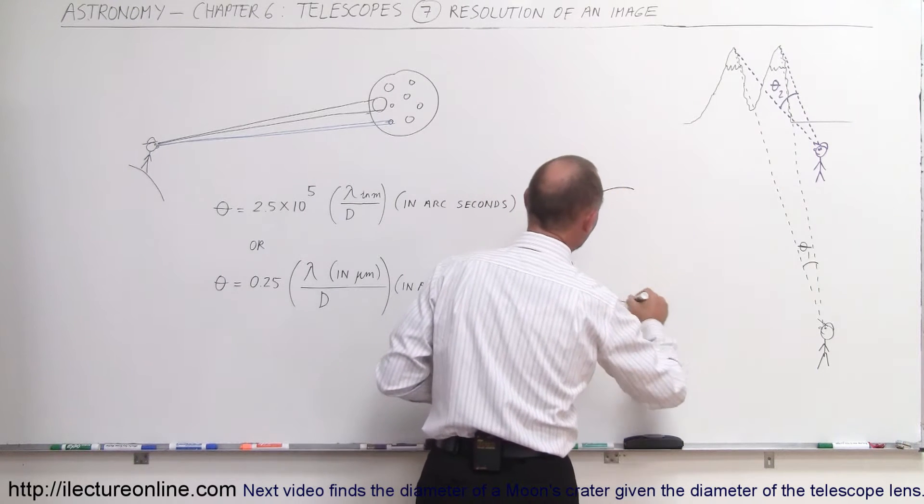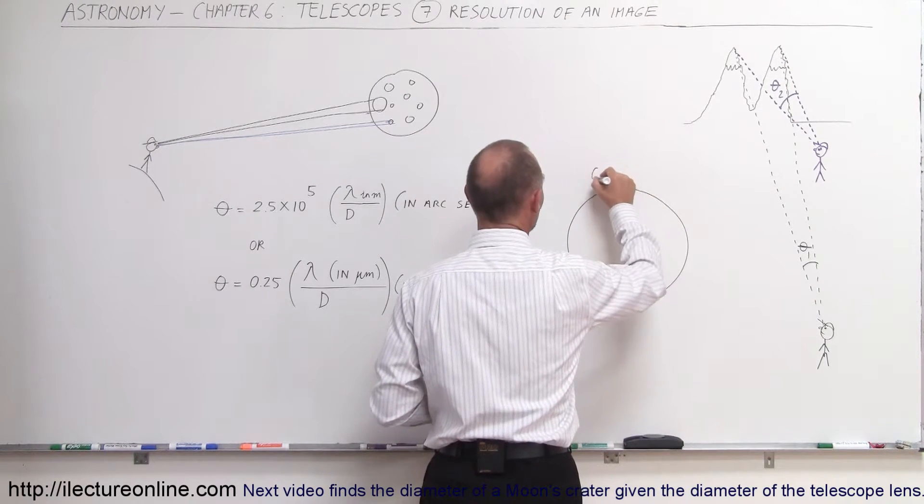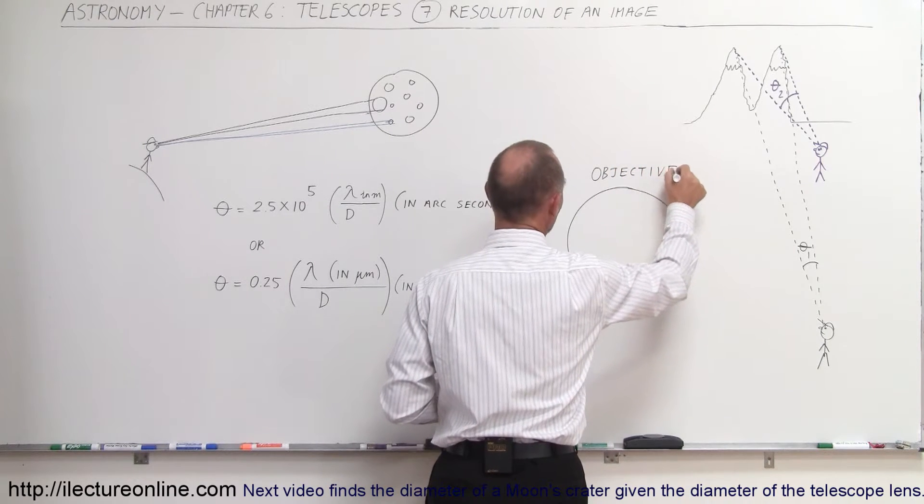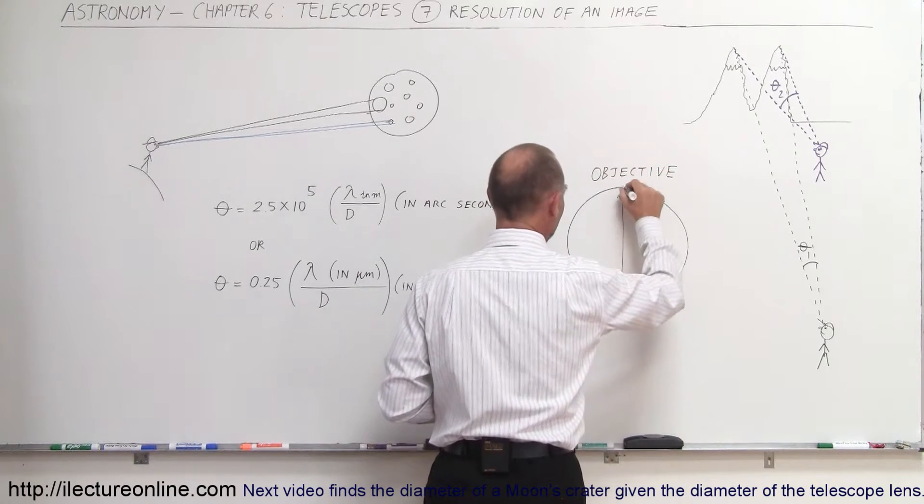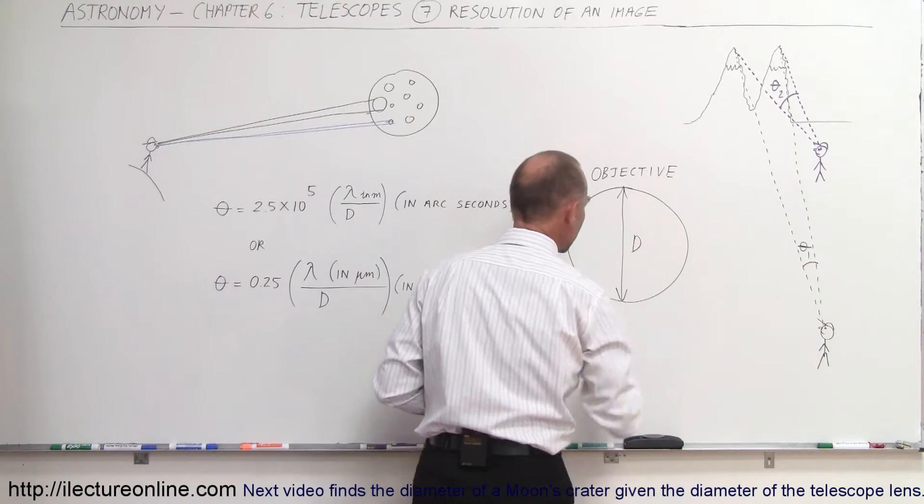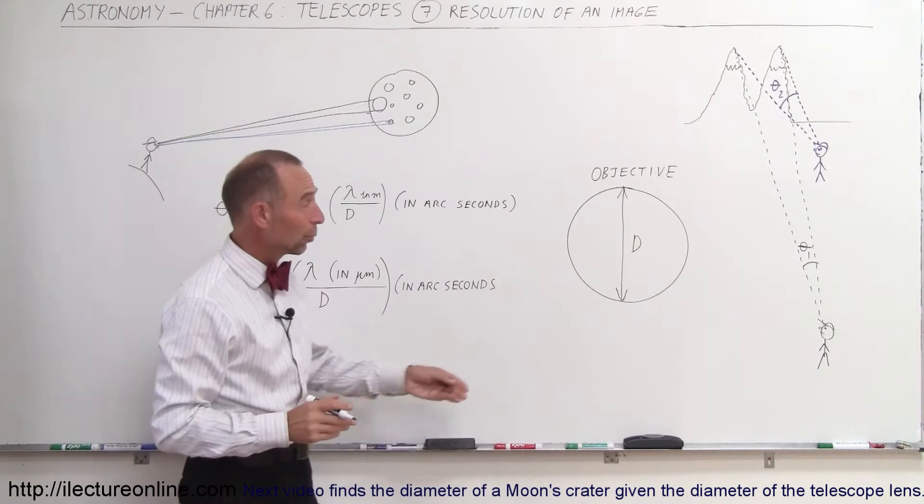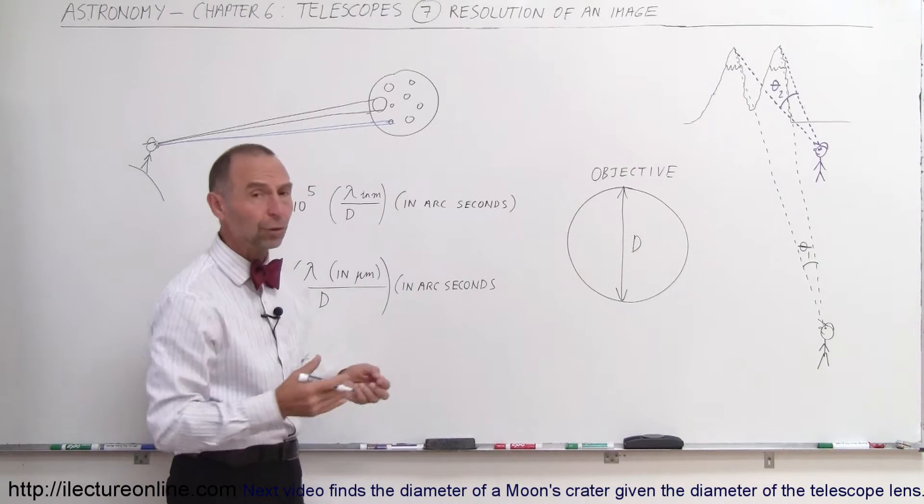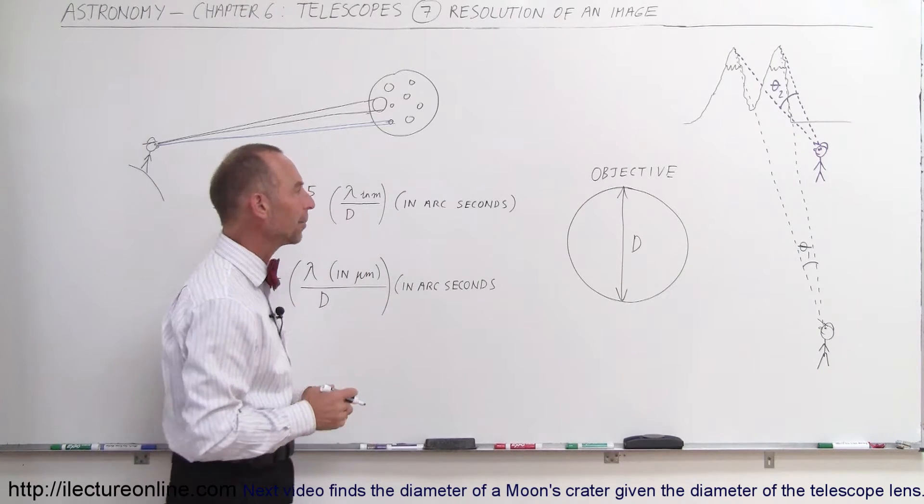So let's say that this is the size of the objective lens or the objective mirror. This is called the objective. And the objective will have a certain diameter. Let's call that D. And some of the biggest telescopes in the world have diameters of over 30 feet. Like the Keck telescopes in Hawaii have a diameter of 32 feet, about 10 meters in diameter.